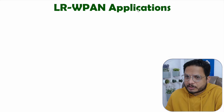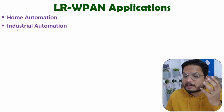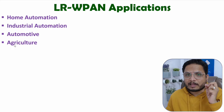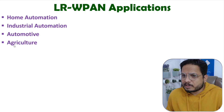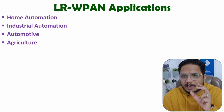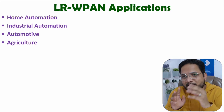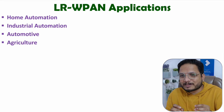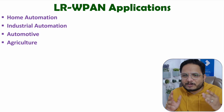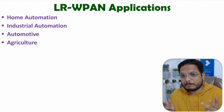This standard is available with a variety of applications: home automation, industrial automation, automotive applications, and agriculture. Finally, I want to clarify: IEEE 802.15.4 standard is not Zigbee. Zigbee is using this standard at the data link layer and at the physical layer, but Zigbee and this standard are not equal. I have seen students saying this standard is Zigbee — Zigbee is using this standard at the data link layer and physical layer. If you have anything to share, please note it in the comment section. Thank you so much for watching.